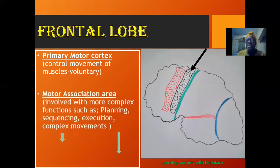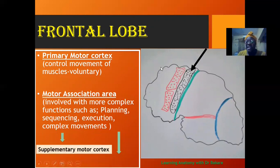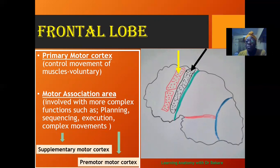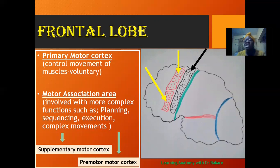Anterior to the primary motor cortex we have the motor association area, with two major sub-regions: the supplementary motor cortex and, more inferior to it, the premotor cortex. These help to plan the execution of motor action, the initiation of motor action, and also sequential and complex movements.